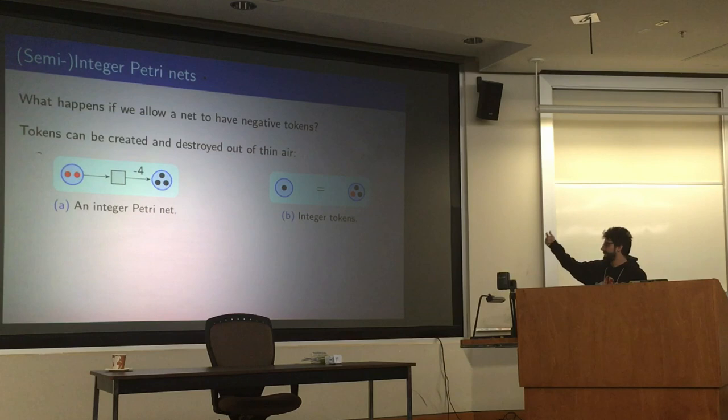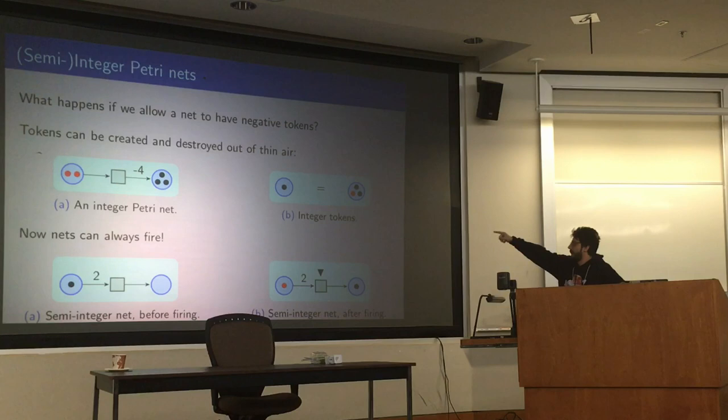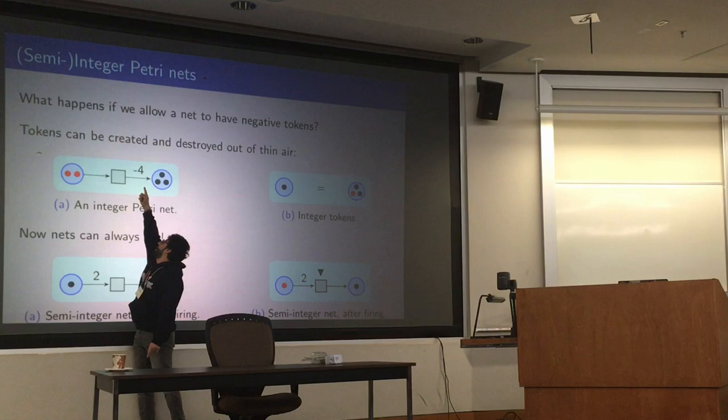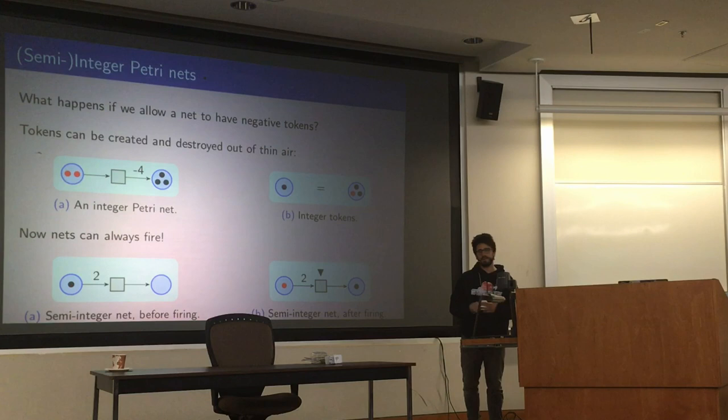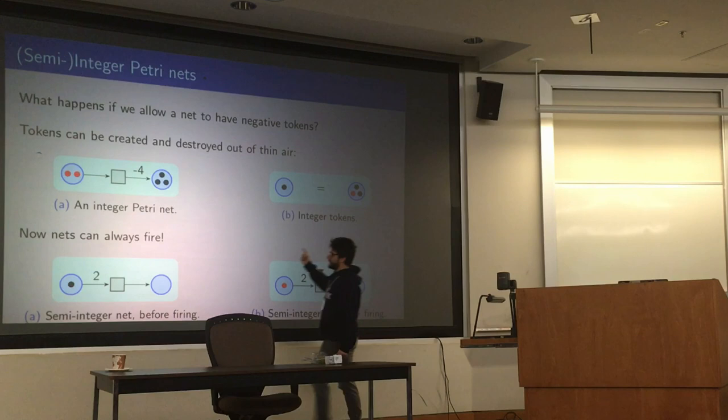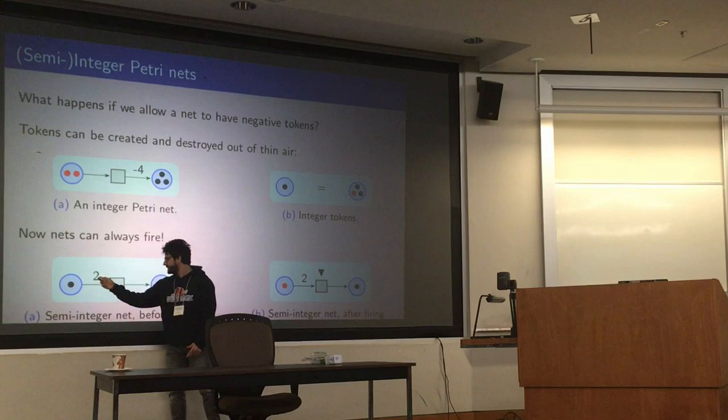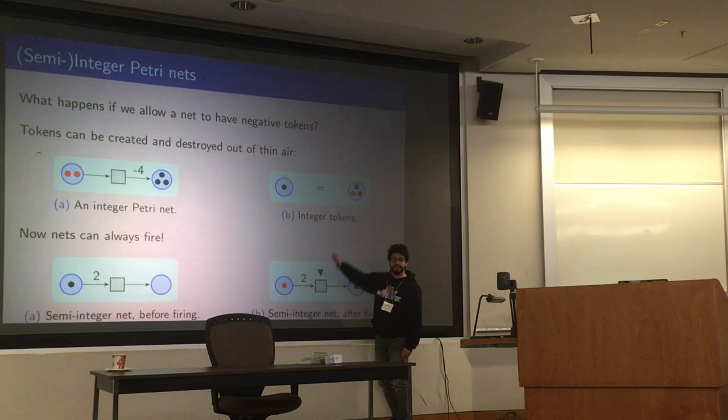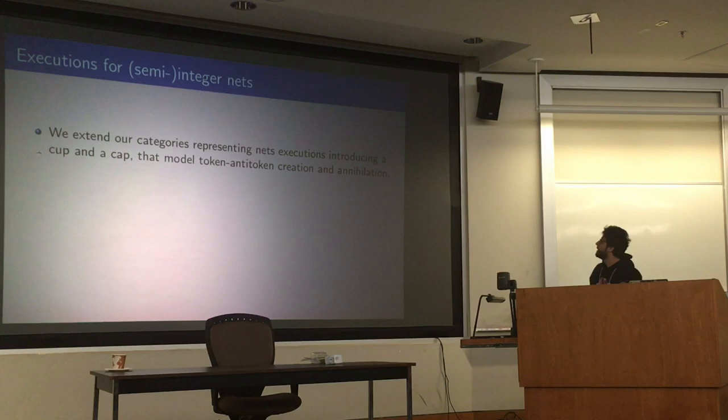We can generalize nets in two ways. The first one is we take standard nets and we just allow for negative tokens. The second one is that we also allow negative numbers on the edges. So now a net can consume negative tokens or spit out negative tokens. So a thing that happens basically immediately is that now transitions can always fire. Even if this needs two and I only have one, the transition can make a debt using this thing and can fire.